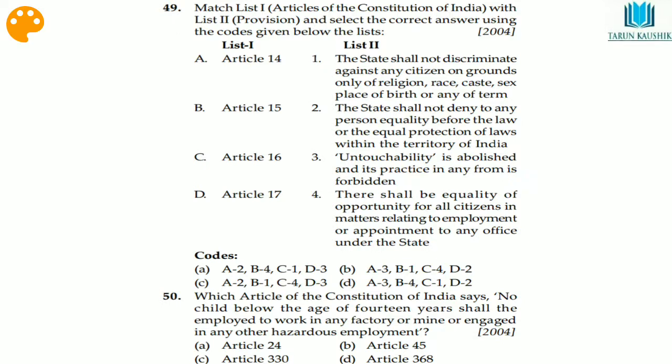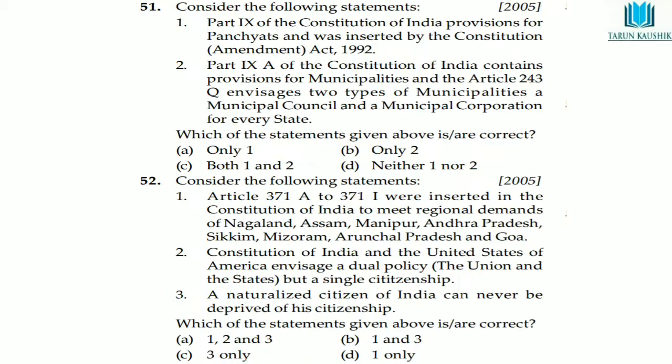Question 50: which article of the Indian Constitution says that no child below the age of 14 years shall be employed to work in any factory or mine or engaged in any other hazardous employment? The answer is Article 24. It is a simple fundamental right question.